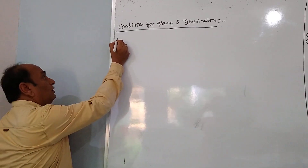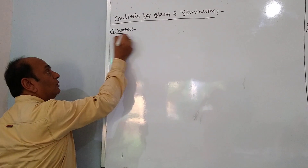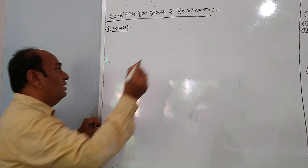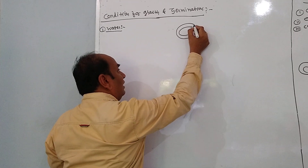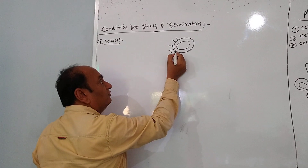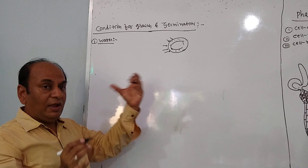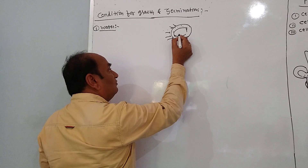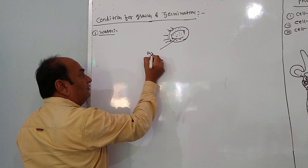The first condition for growth and germination is water. Here is a seed — inside the seed there is an embryo. Once water enters into the seed, the seed becomes imbibed. That process is known as imbibition.